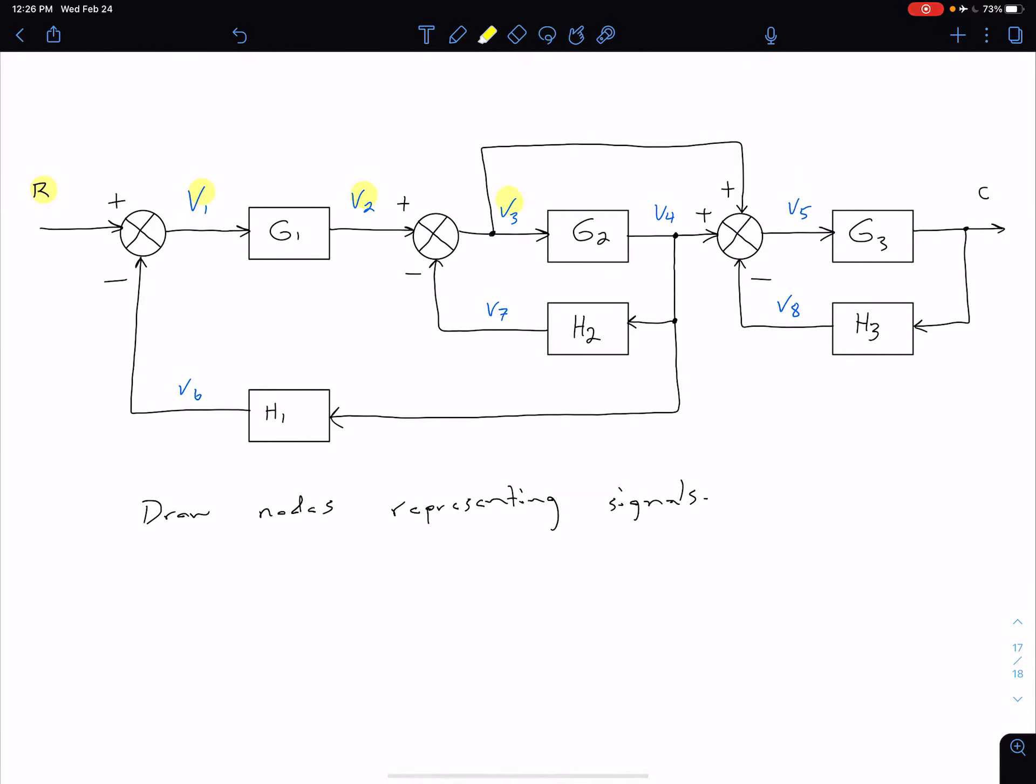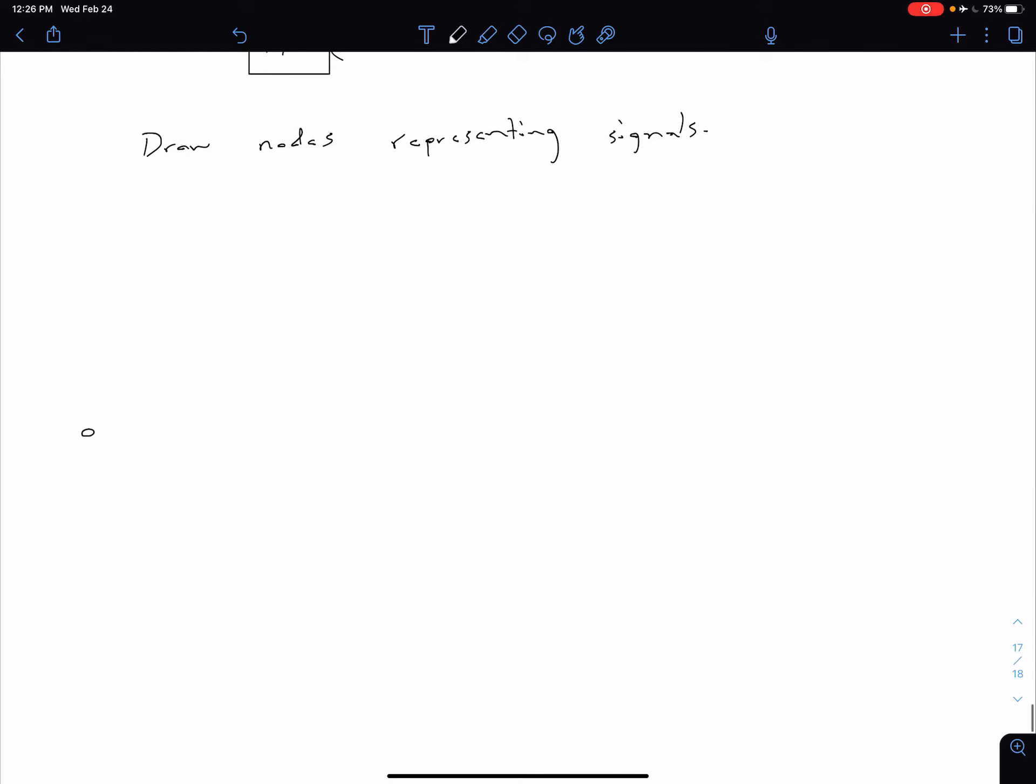So I'm going to look at this and say I've got a signal R, V1, V2, V3, V4, V5, and C. So I've got seven signals across the top. So I'm going to put seven little nodes across my top line here.